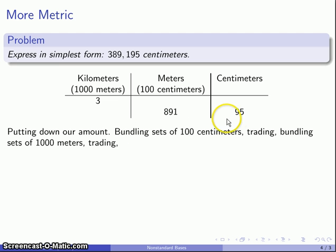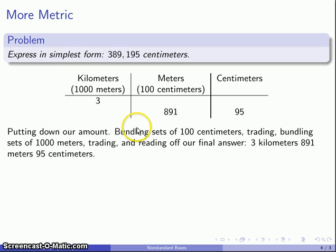And so again, not enough centimeters to make a meter. Not enough meters to make a kilometer. And so I'm done. And so the equivalent form, 3 kilometers, 891 meters, 95 centimeters.